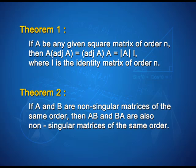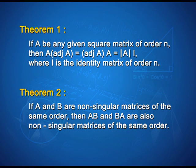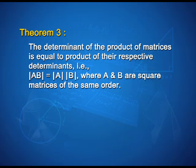Now let us look into some theorems involving singular and non-singular matrices. Theorem 1: If A is any square matrix of order n, then A × adj(A) = adj(A) × A = det(A) × I, where I is the identity matrix of order n. Theorem 2: If A and B are non-singular matrices of the same order, then their products AB and BA are also non-singular matrices of the same order. Theorem 3: The determinant of the product of matrices equals the product of their respective determinants, i.e., det(AB) = det(A) × det(B), where A and B are square matrices of the same order.